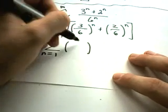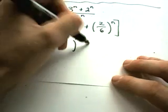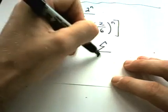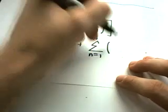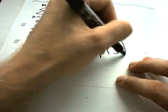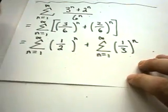So I'm going to do my 3 over 6, which is 1 over 2 to the n plus n equals 1 to infinity. 2 over 6, that's the same thing as 1 third to the n.